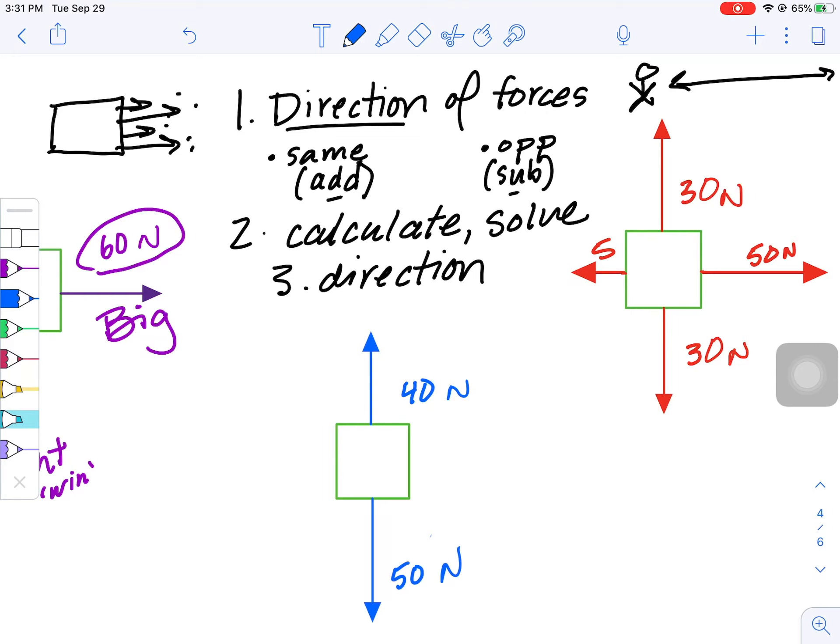Here's my second one. Again, direction of the forces. I'm noticing they're, again, opposite. So, I will subtract once more. Biggest minus the smallest. Calculating out. Gives me a net force of 10 newtons. When I'm thinking about the direction, again, I'm looking for the larger or the winning force. In this example, it will then be down.